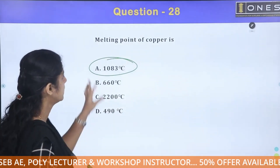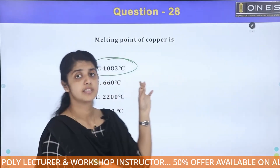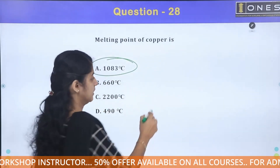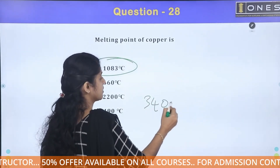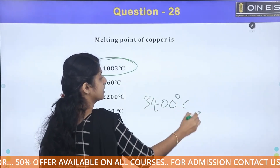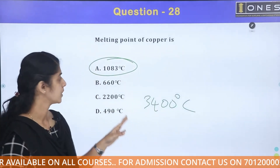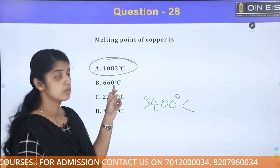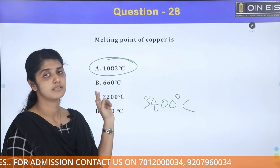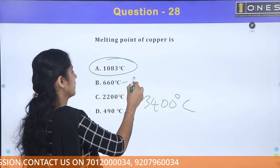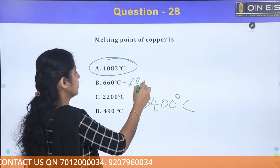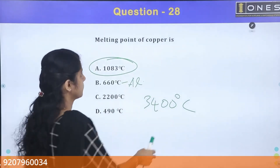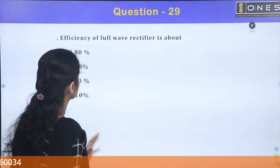The melting point of copper is 1083 to 1084 degrees Celsius. The melting point of tungsten is approximately three thousand four hundred degrees Celsius. The melting point of aluminum is around 650 degrees Celsius.